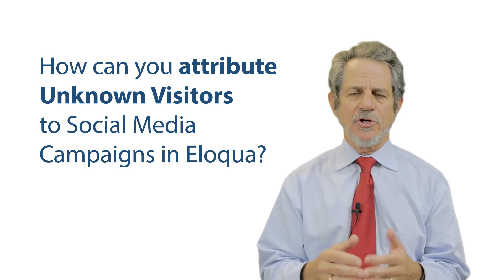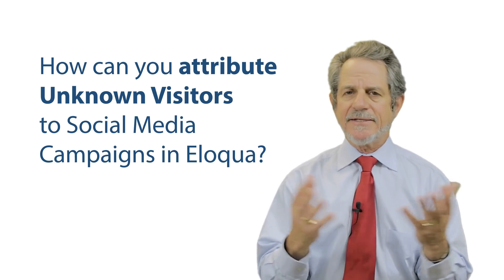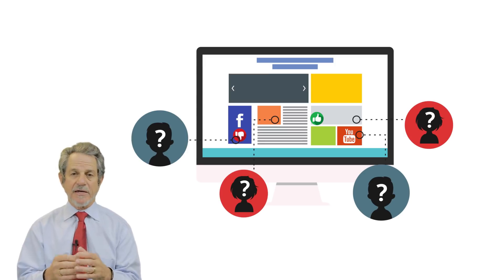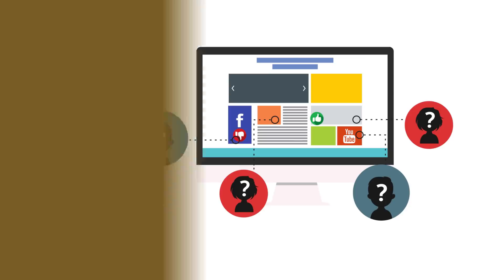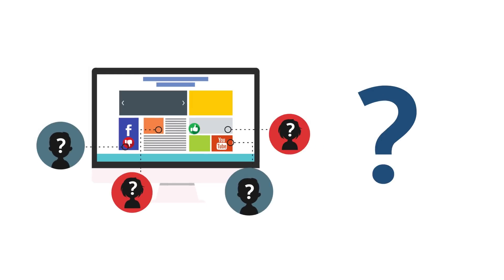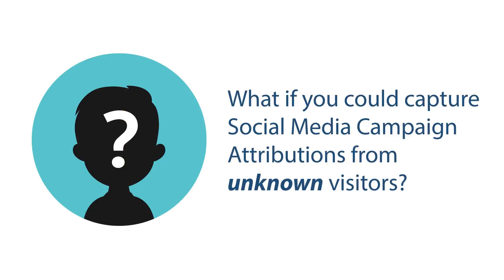But what about unknown visitors? You have people who might click on a banner ad, come to your site, browse around, but not take any action. A couple days later they might be searching something and the search engine will pop up your site — again that's linked to a campaign — and they browse around again but don't take any action. The campaigns that drove them to your site get no attribution because there's no way to connect those unknown visitors to the contact, the lead, and the opportunity. What if you could capture that information? Capture that anonymous data that would allow you to capture the social media campaign attributions and save them until that individual became known?